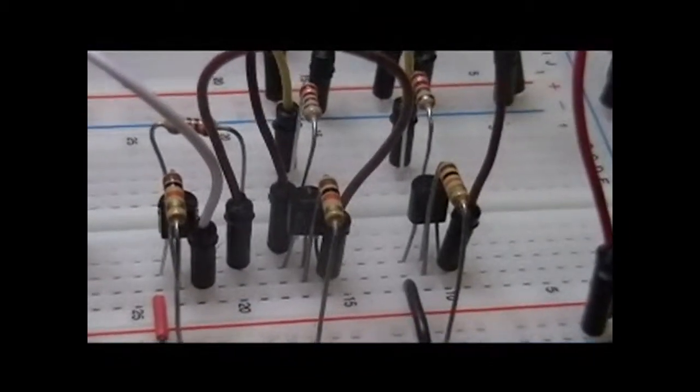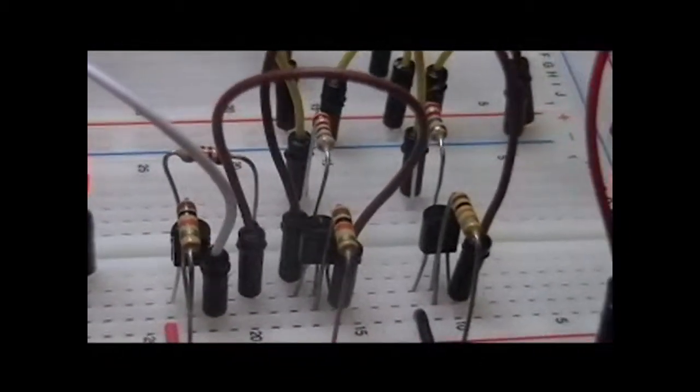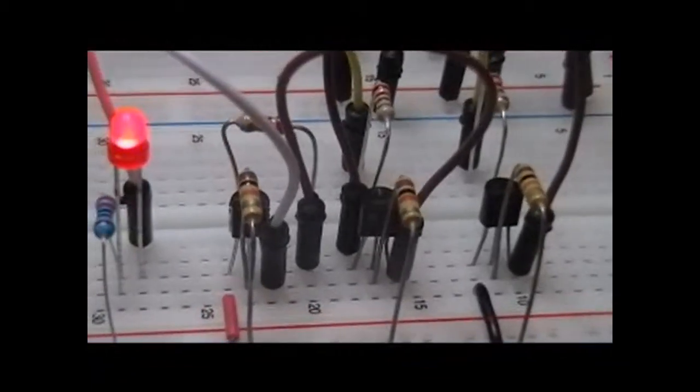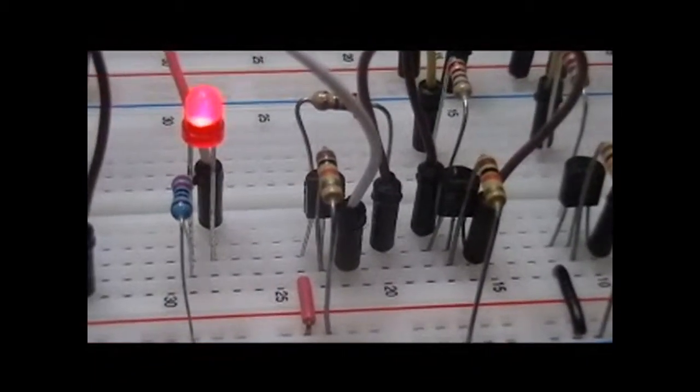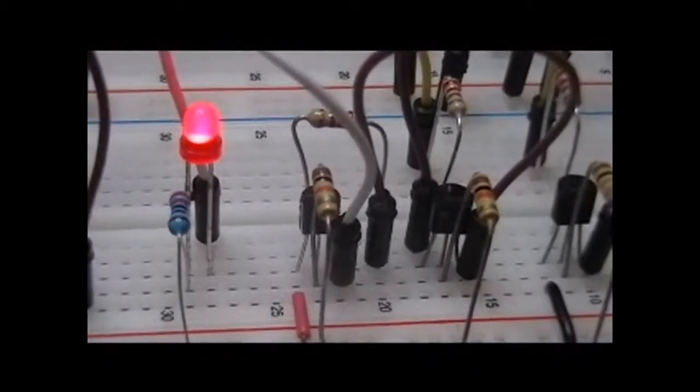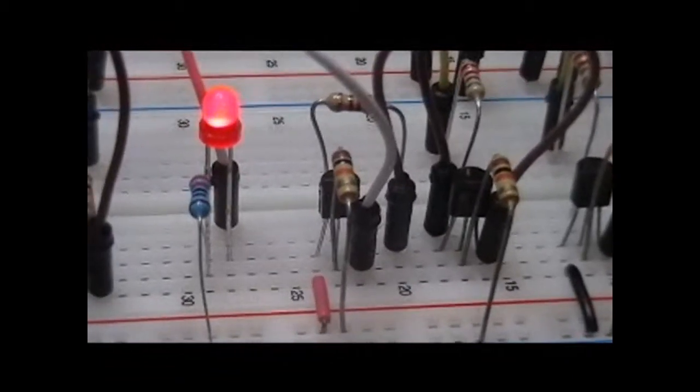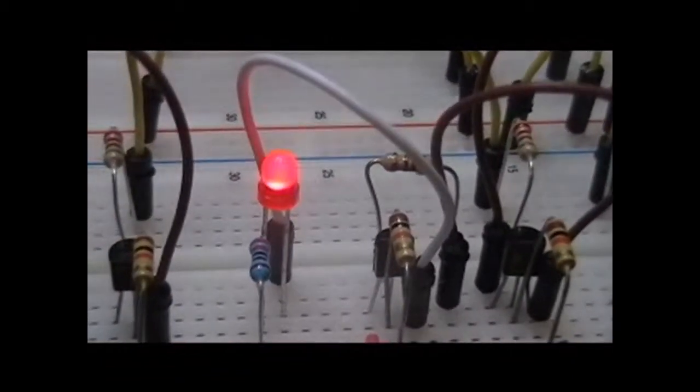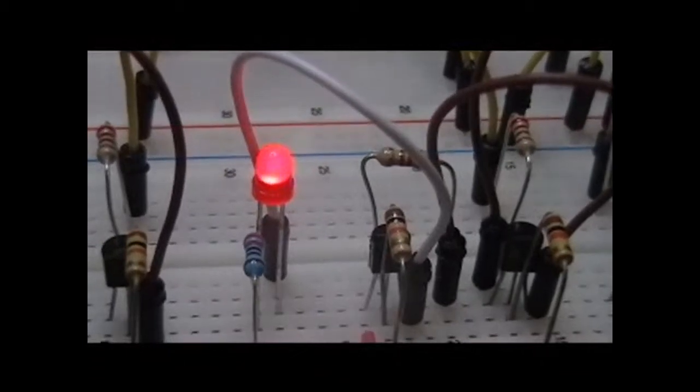So these two, if they're both on, conduct and provide ground to this PNP transistor which, at that point, turns this transistor on and provides the positive current to light the LED.